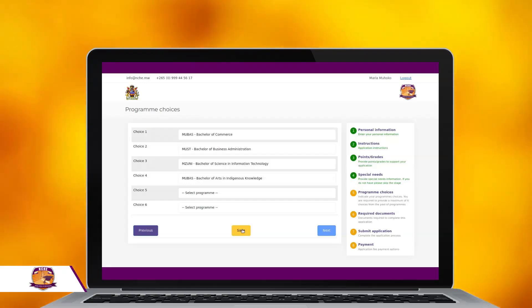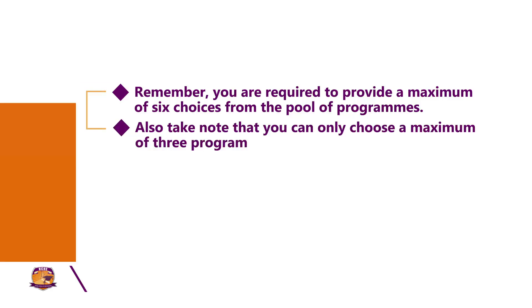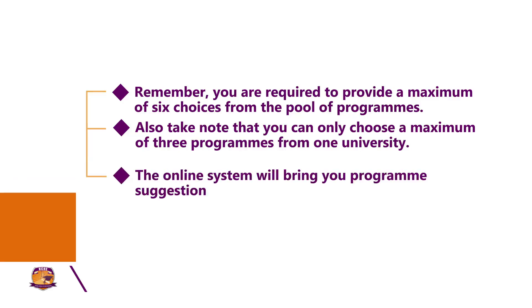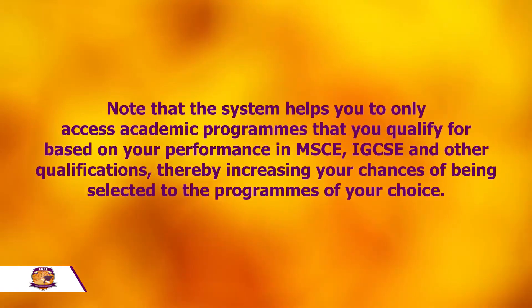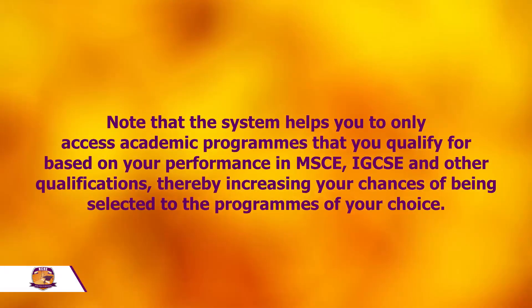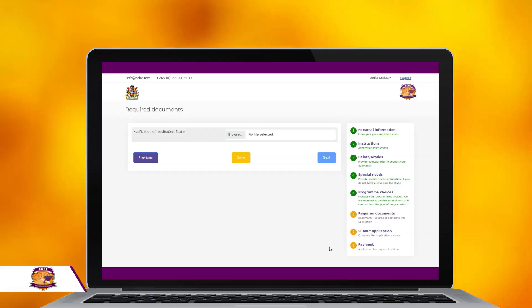On the next page, you will be required to indicate your program choices. Remember, you are required to provide a maximum of six choices from the pool of programs. Also, take note that you can only choose a maximum of three programs from one university. The online system will bring you program suggestions based on your grades, helping you access only academic programs that you qualify for based on your performance in MSCE, IGCSE, and other qualifications, thereby increasing your chances of being selected to the programs of your choice.